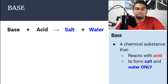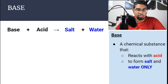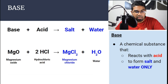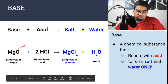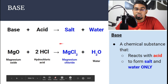A base is a chemical substance that reacts with acid to form salt and water only — no other products should be formed. For example, magnesium oxide is a metal oxide. When magnesium oxide reacts with hydrochloric acid, we get magnesium chloride, which is a salt, and water only. There are no other products formed. Therefore, magnesium oxide is a base.